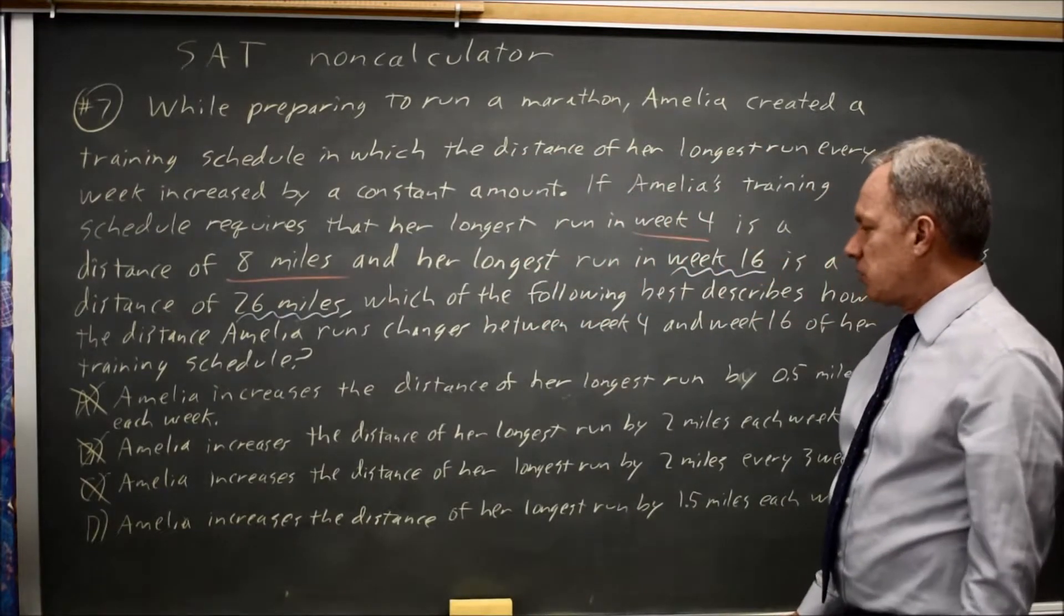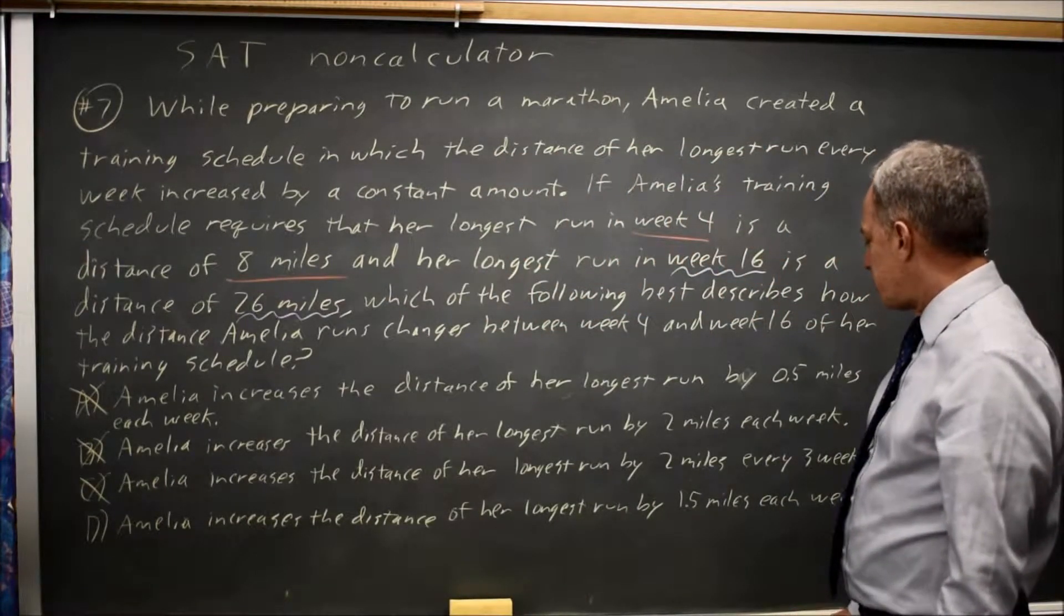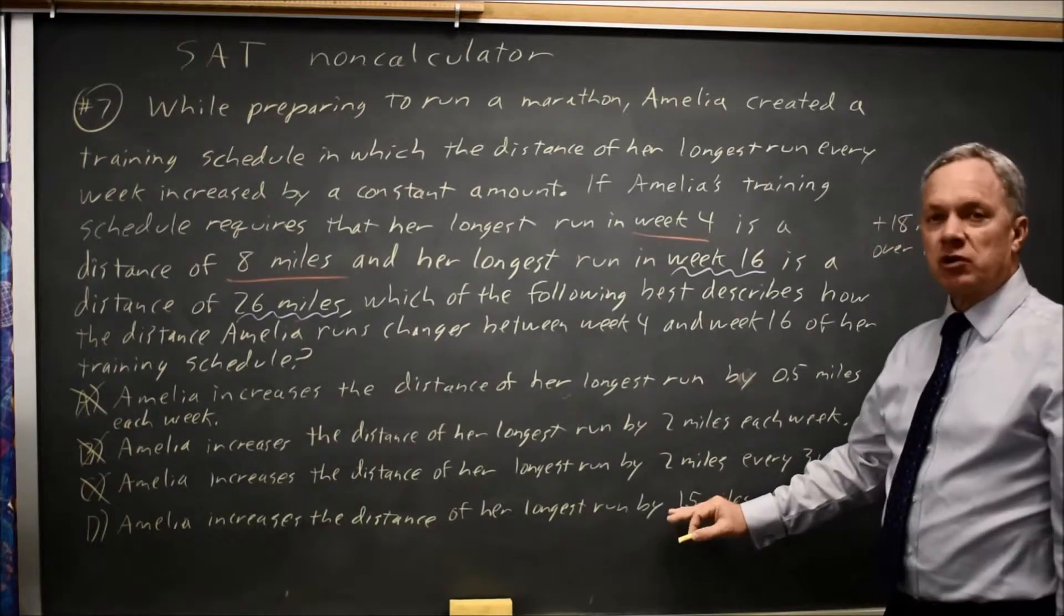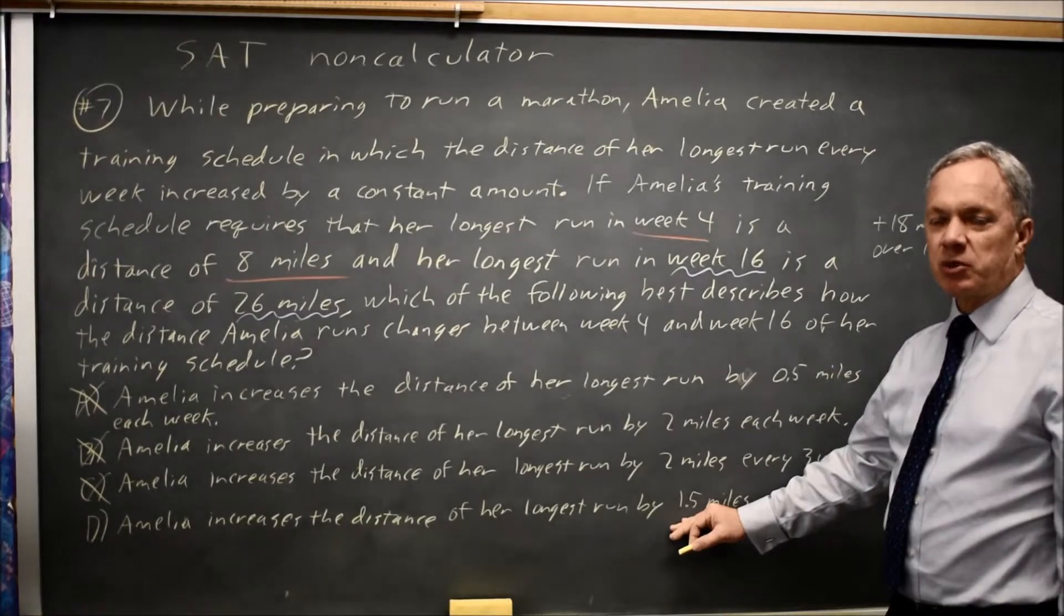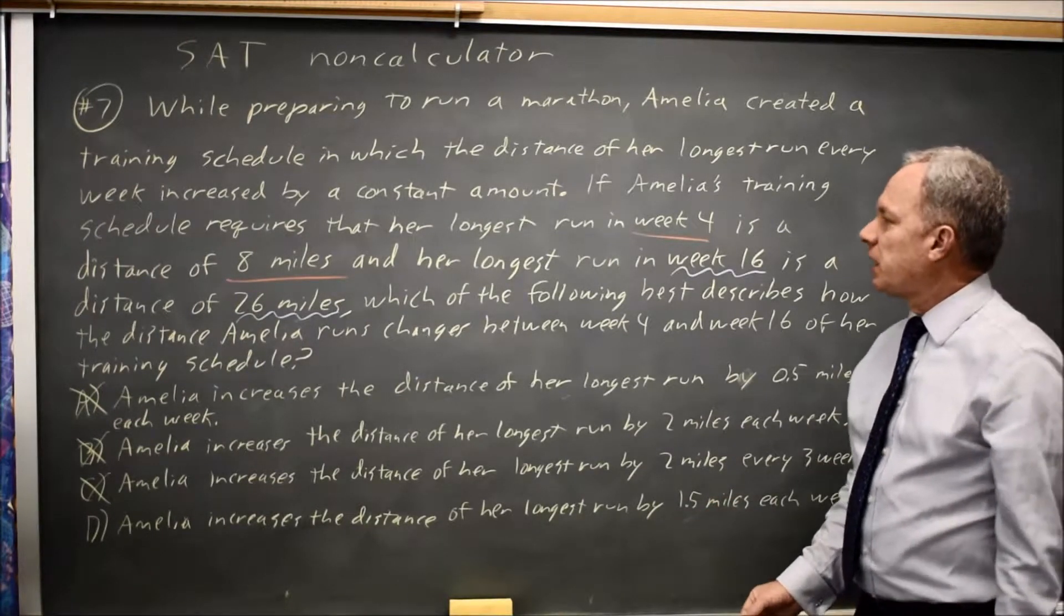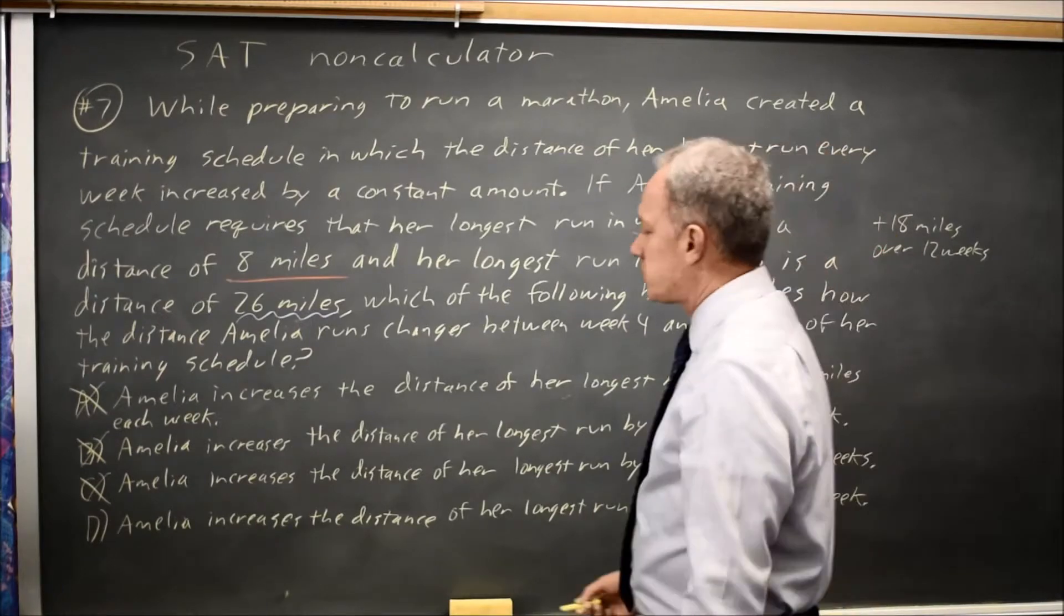Choice D, Amelia increases the distance for her longest run by one point five miles each week. I have twelve weeks. Twelve weeks times one point five miles per week is eighteen miles, and she's supposed to increase by eighteen miles, so that is correct.